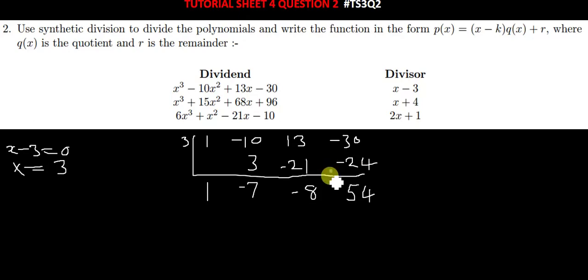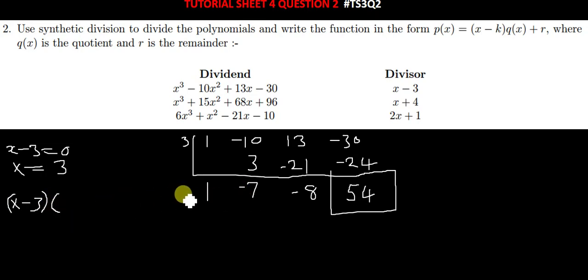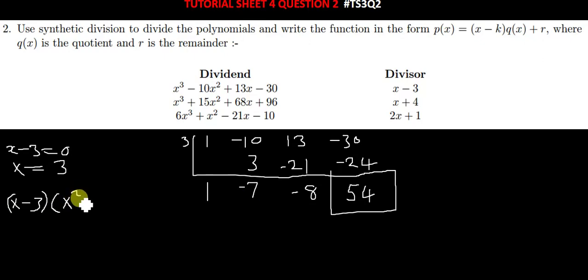This last value is your remainder, and these are the coefficients of the quadratic equation that is going to be your result. So you can write it as: your quotient factor was x minus 3, and then you write your quadratic equation in brackets — it's going to be x squared minus 7x minus 8.